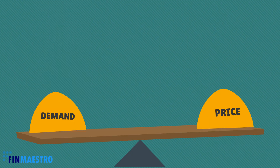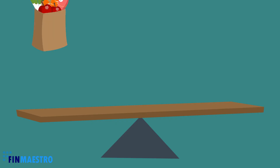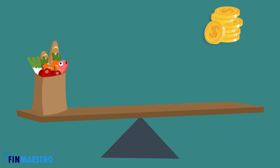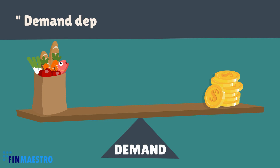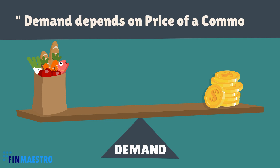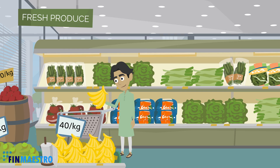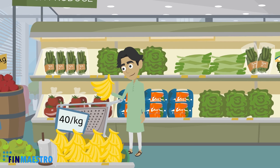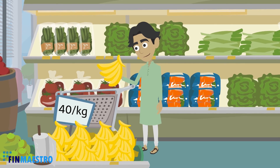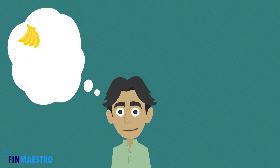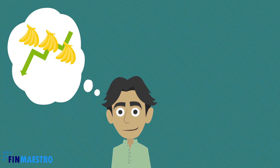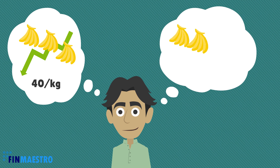Demand is always at a price. The demand for anything at a given price is the amount of it which would be bought per unit of time at that price. It simply means how much a person is willing to buy at a certain price during a specified period. At another price, he will buy a different quantity — more at a lower price and lesser at a higher price.